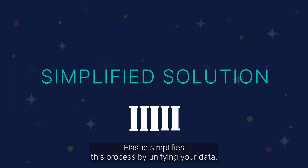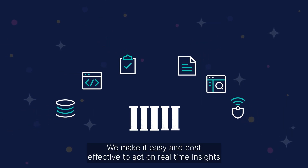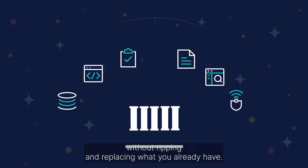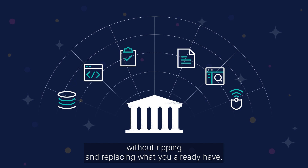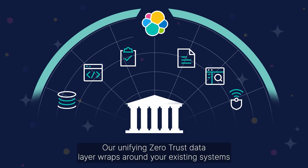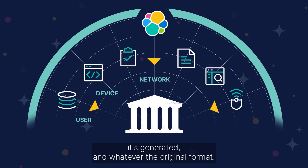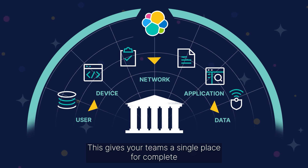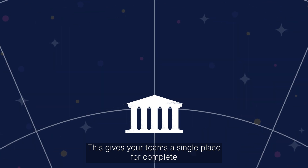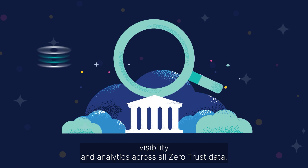Elastic simplifies this process by unifying your data. We make it easy and cost effective to act on real-time insights without ripping and replacing what you already have. Our unifying zero trust data layer wraps around your existing systems to ingest all data across all pillars, wherever it's generated and whatever the original format. This gives your teams a single place for complete visibility and analytics across all zero trust data.